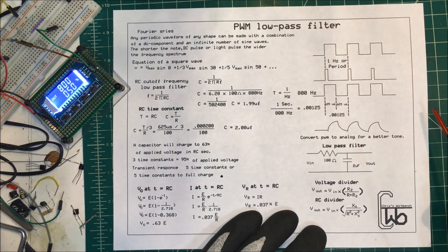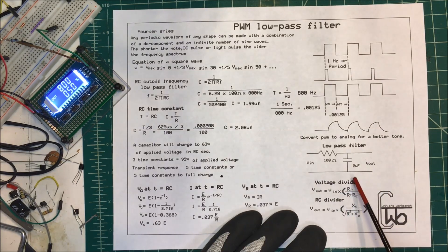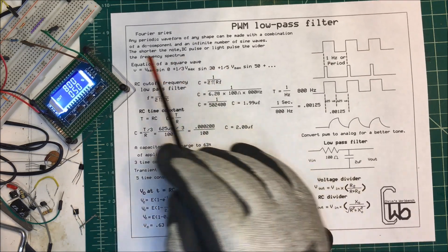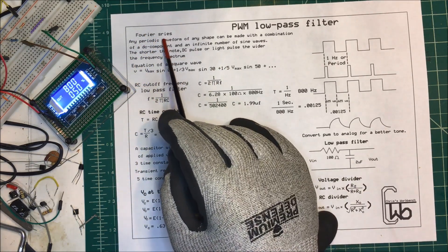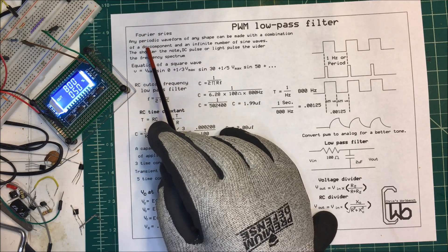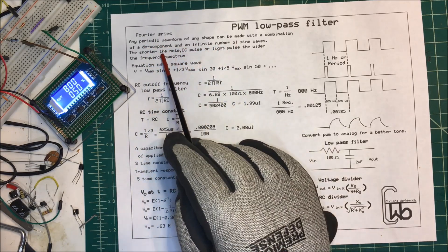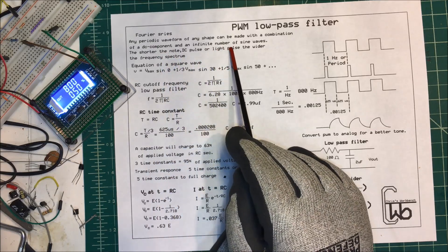Why does this low-pass filter work? Here's a low-pass filter down here and we'll do these calculations. To start with, Fourier said that any waveform of any shape can be made with a combination of a DC component and an infinite number of sine waves.